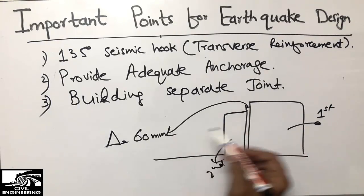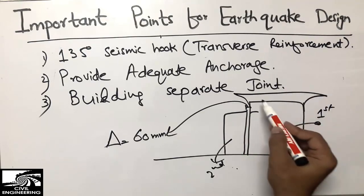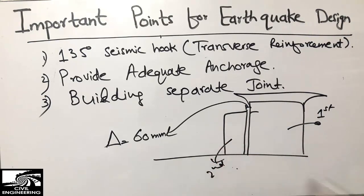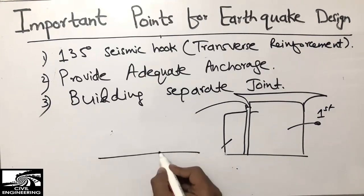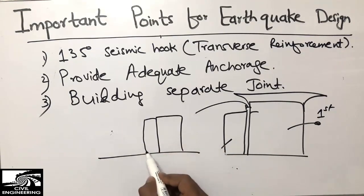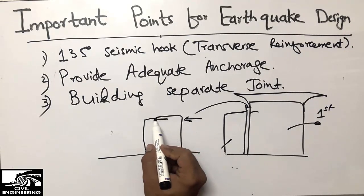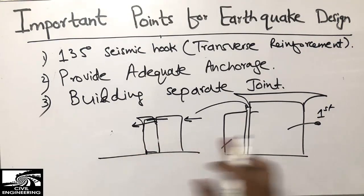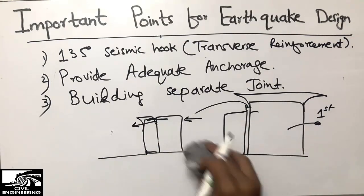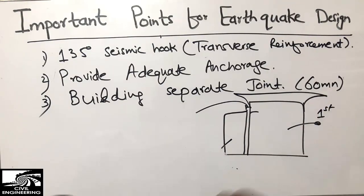When an earthquake comes, the buildings will sway back and forth. If there is no gap between two adjacent buildings, the lateral displacement of one building will collide with and damage the other. That is why we provide this minimum 60 millimeter building separation joint.